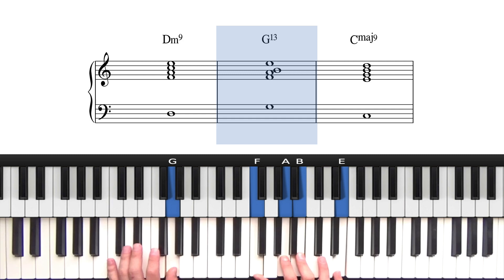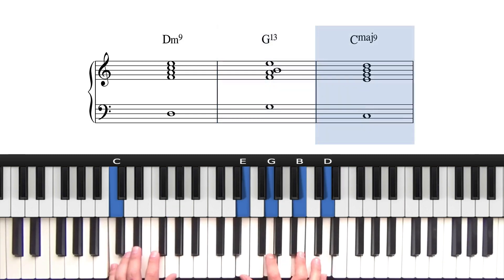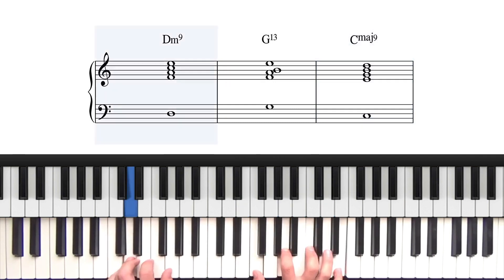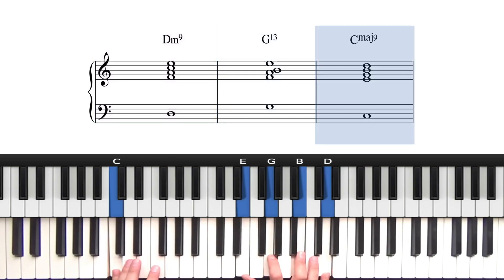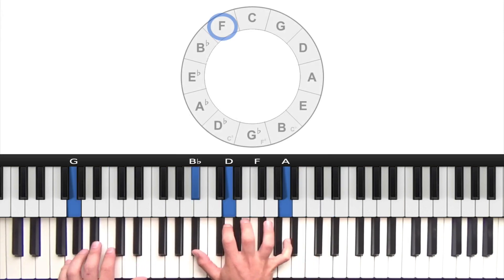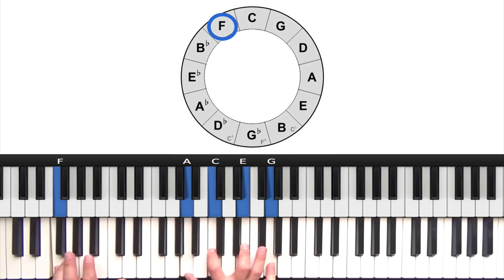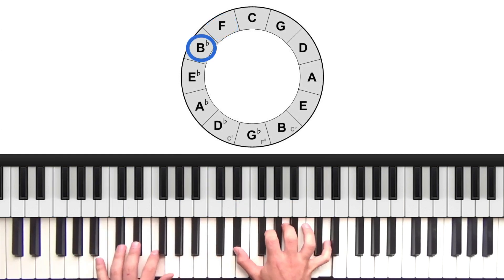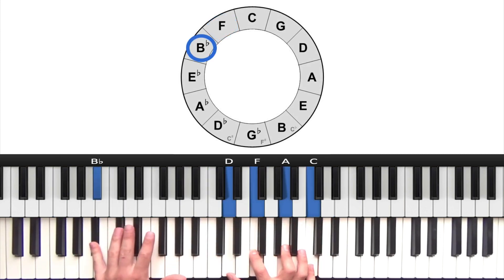So that's a dominant 13 voicing, and then down to the 1 major 9 - root, major 3, 5, major 7, and 9. So we took that voicing around all 12 keys. If you haven't completed this, then I'd recommend that you do that first.